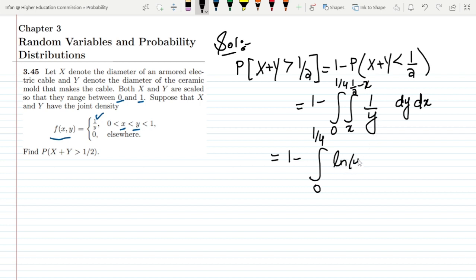This will be natural log of y and the range of it will be x to 1/2 minus x, and that would be dx. Now putting values here, what I will get: 1 minus integral from 0 to 1/4 of [natural log of (1/2 minus x) minus natural log of x] dx.